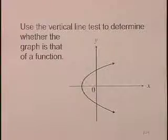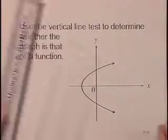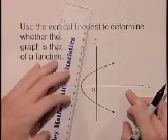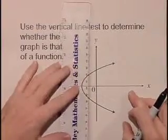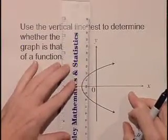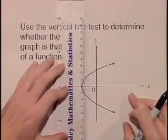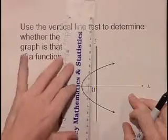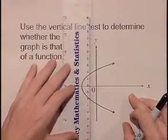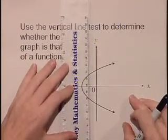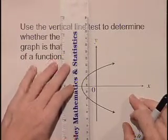Use the vertical line test to determine whether the graph is that of a function. The vertical line test states that if we draw a vertical line through points on our graph, it should only touch our graph one time.